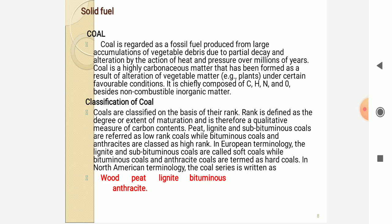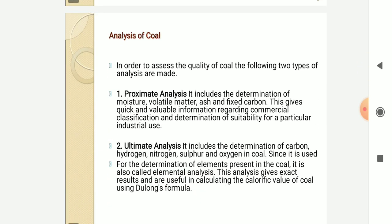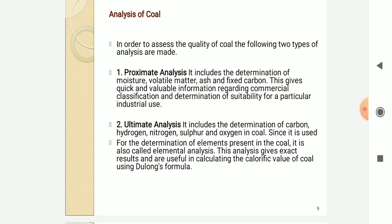In North American terminology, the coal series runs from peat. Some examples are wood, peat, lignite, bituminous, and anthracite. In order to assess the quality of coal, two types of analysis are done: proximate analysis and ultimate analysis. Proximate analysis includes the determination of moisture, volatile matter, ash, and fixed carbon, and gives quick valuable information regarding commercial classification and suitability for particular industrial use. Ultimate analysis includes the determination of carbon, hydrogen, nitrogen, sulfur, and oxygen in the coal, and since it determines the elements present, it is also called elemental analysis.